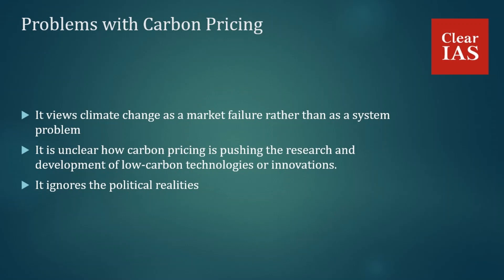This approach also places more emphasis on efficiency than on effectiveness in addressing climate change. For example, to limit global warming to less than 1.5 degrees Celsius, there is hardly any time to reach carbon neutrality. Carbon pricing, by allowing polluters to choose the most cost-effective abatement options, basically allows them to go for the low-hanging fruit. This may not be enough to address the urgent and widespread issue of climate change. It is also unclear how carbon pricing is driving research and development of low-carbon technologies and innovations.